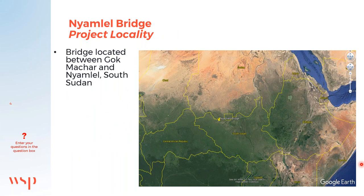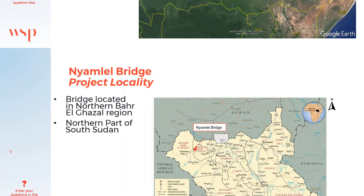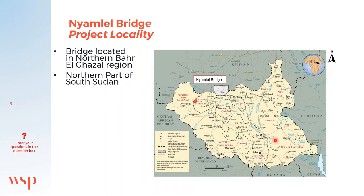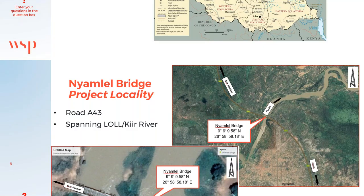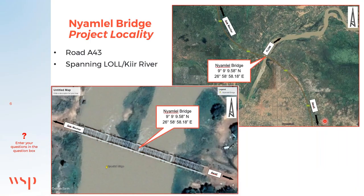Regarding the project locality, South Sudan is bordered by Ethiopia, Kenya, Uganda, the DRC, the Central African Republic, and Sudan. The bridge itself is located in the northern Bar-el-Ghaza region in the southern part of Sudan. Zooming in on the project's location, Road A43 spans the Lowell River, and that is where the bridge is situated.